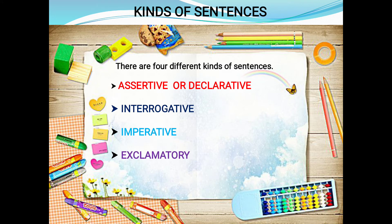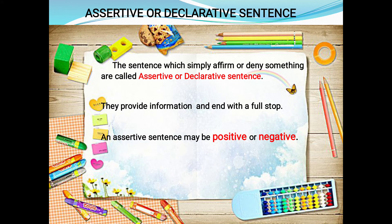Now we will discuss about different kinds of sentences. There are four different kinds of sentences: assertive or declarative sentence, interrogative sentence, imperative sentence, and exclamatory sentence.